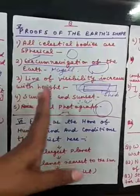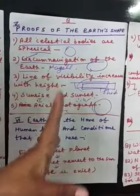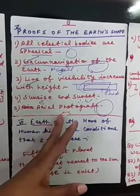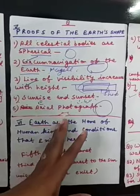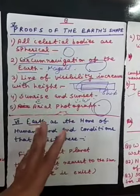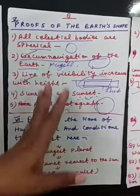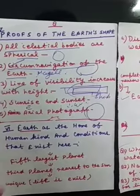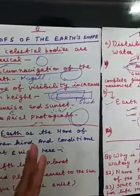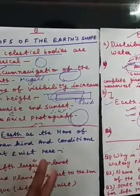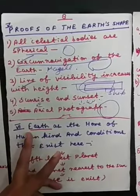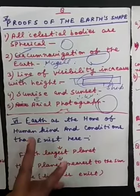Please read it thoroughly from the book. You are all having a book — check what examples and diagrams are drawn, and learn it thoroughly. Now the next topic we are talking about is Earth as a unique planet and the conditions that exist here.